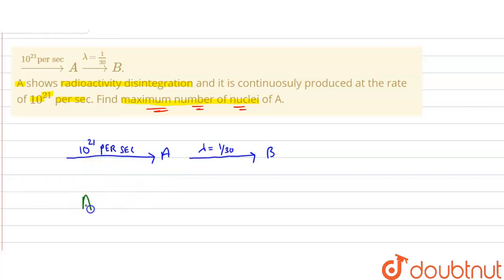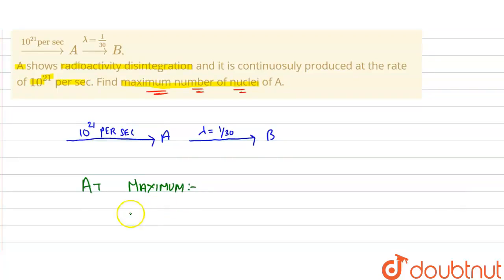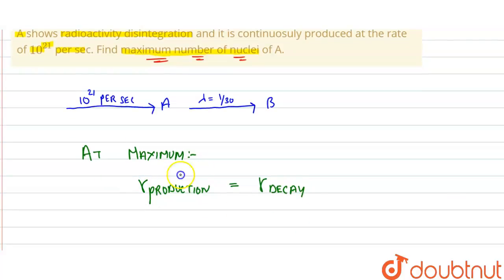We know that at maximum condition, the rate of production equals the rate of decay.